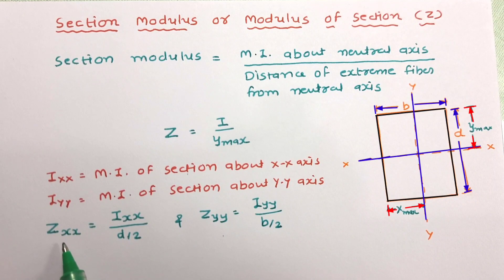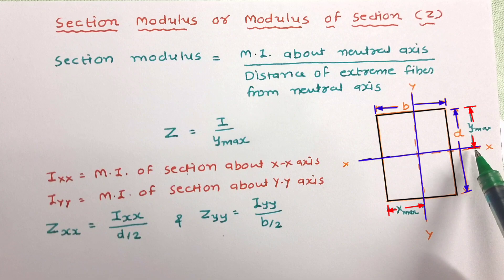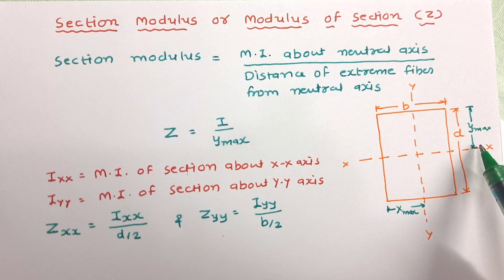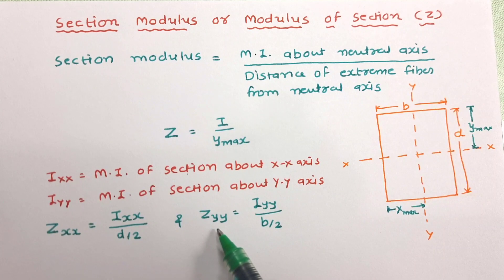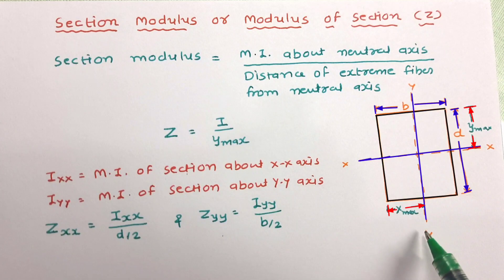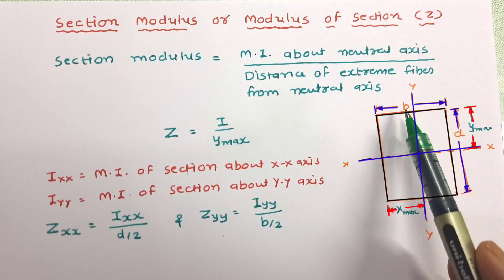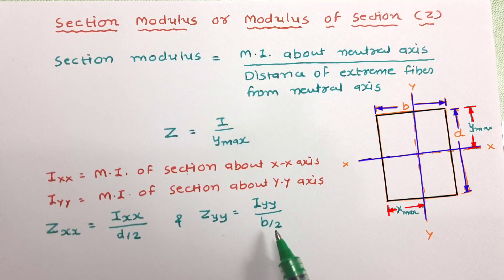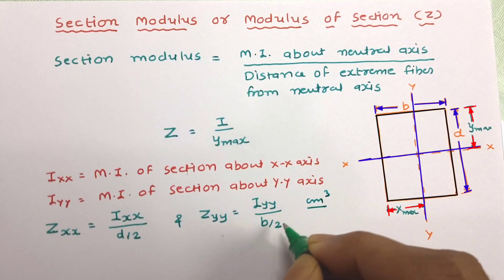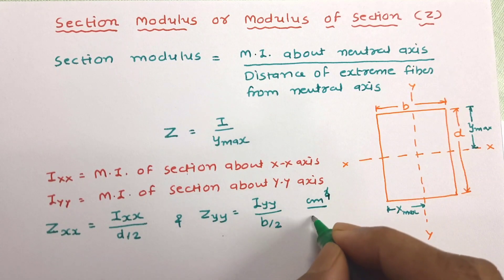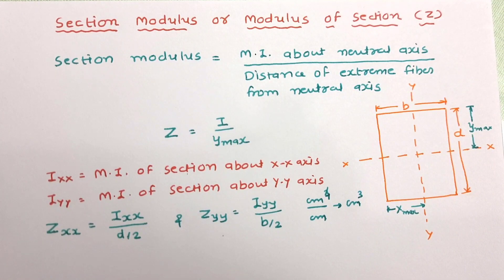Section modulus about XX axis, Z_XX, is equal to I_XX divided by D/2, because the distance from the neutral axis to the extreme fiber is half of D. In the case of Z_YY, that is the section modulus about the YY axis, it will be I_YY divided by B/2. The unit of I_YY is centimeter to the 4th power, and the unit of B/2 is centimeter. So the unit of section modulus is centimeter cubed. This is all about section modulus.